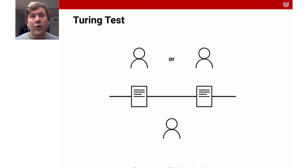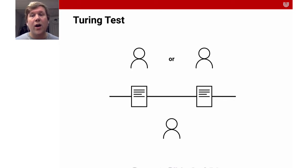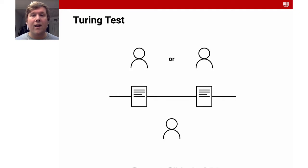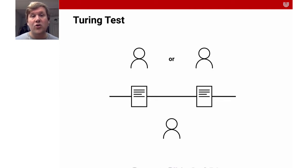You probably have heard about this by now, but let's just recap what it's about. The basic idea or the basic question that Turing wanted to answer is whether machines can think. And in one of his papers, he invented the so-called Turing test to check whether a machine is thinking or not. He based this on the so-called imitation game.